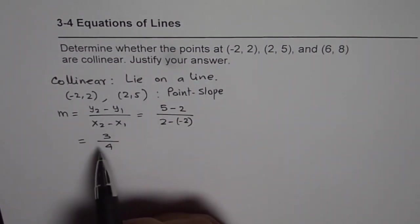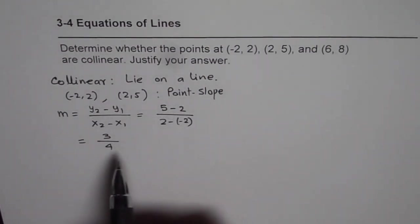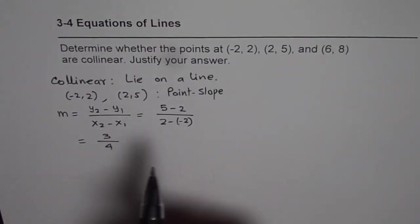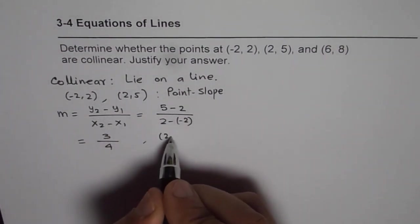The equation of the line now can be written in point-slope form since we know the slope, and let us now consider the point which is (2, 5).